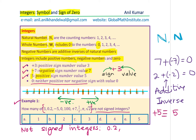0.2 is not an integer. 0 does not have a sign. Half is not an integer. Pi is an irrational number, just as square root 2 is. So we have five such numbers: 0.2, 0, half, pi, and square root 2 — making the count 5. The correct answer is E. Not signed integers includes 0, which doesn't have a sign, and the other numbers which are not integers.